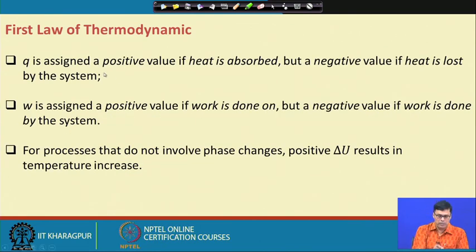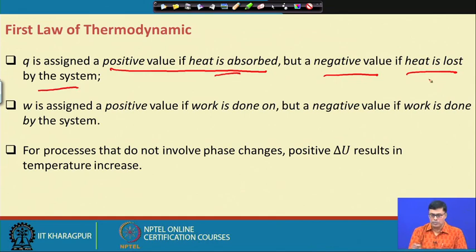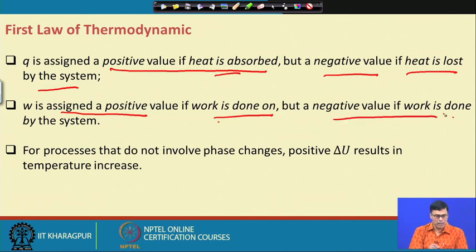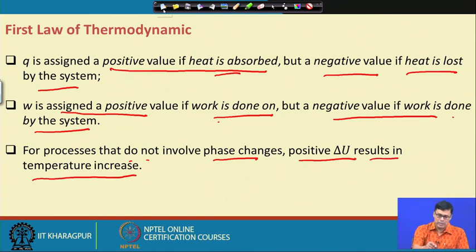q is assigned a positive value when heat is absorbed (endothermic) and negative when heat is lost by the system (exothermic). w is assigned positive when work is done on the system and negative when work is done by the system. For processes that do not involve phase changes, a positive value of internal energy results in a temperature increase.